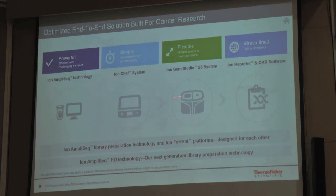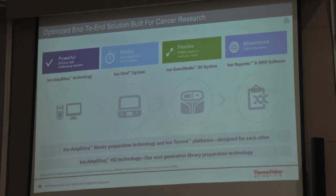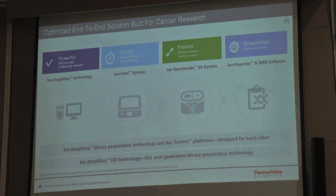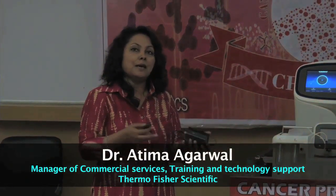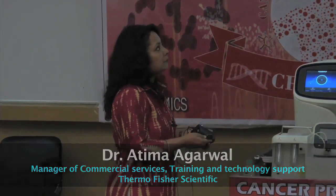Targets are templated on Ion Chef systems and sequenced on GeneStudio S5. Harsh will talk briefly about Ion Reporter and OKR software to explain how variations are annotated and a report is generated. More recently, Thermo Fisher introduced AmpliSeq HD technology, which is specifically designed for highly degraded samples — such as DNA or RNA from FFPE blocks or liquid biopsy samples. AmpliSeq HD does not compromise on the limit of detection while still amplifying all targets at the same efficiency.